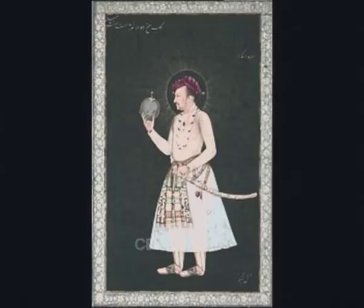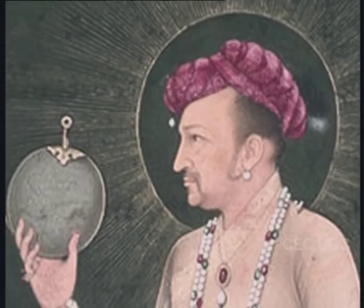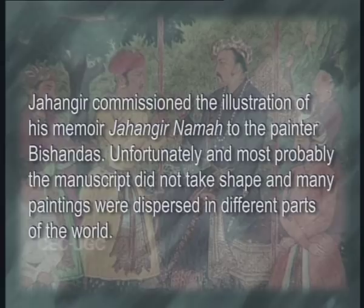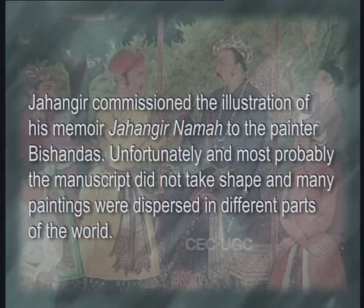Among his portraits are to be found a number of allegorical paintings which testify to the mythopoetic role that he had set himself as a king. Here we have the first painting where he is seen holding up the globe, which symbolizes also his name, Jahangir, meaning the world gripper. We now see that almost all incidents in the life of the emperor considered important were to be recorded through painting.